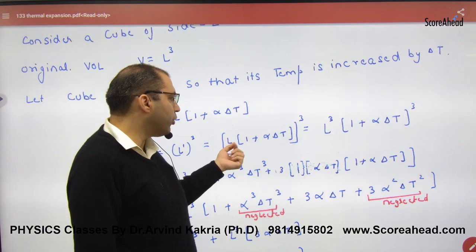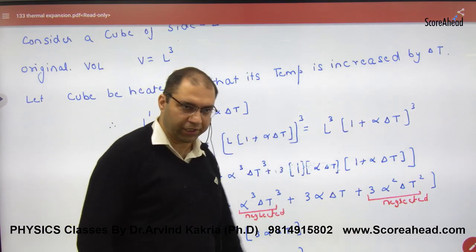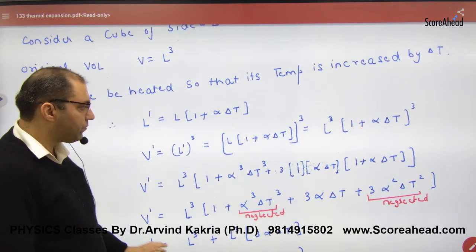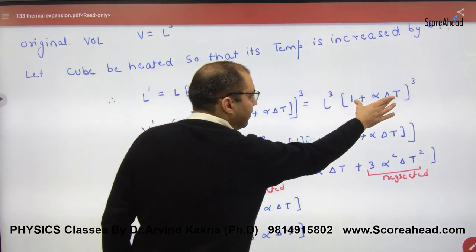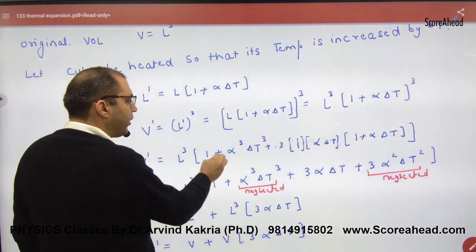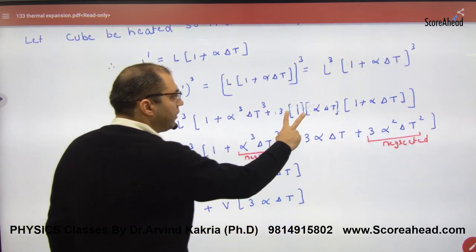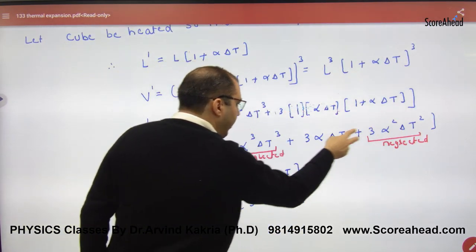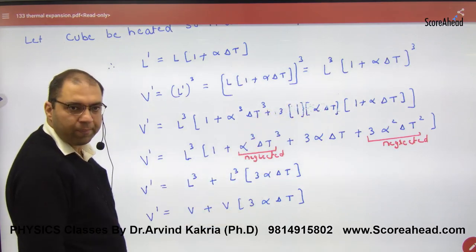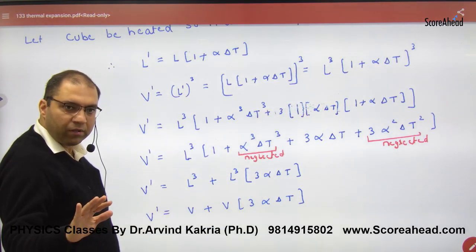So open it. L cube, 1 plus alpha into delta T cube. Open it. Now, A plus B cube: A cube, B cube, 3ab into A plus B. And just multiply these terms and expand the whole bracket.